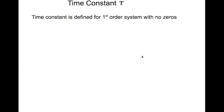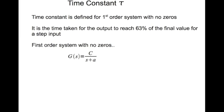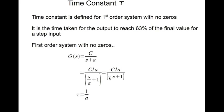Time constant. The time constant is usually defined for a first-order system with no zeros. It is defined as the time taken for the output to reach 63% of the final value for a step input. The first-order system with no zeros is generically written as g(s) = c divided by (s + a), where c is some constant and a is the location of the pole. I can rewrite this as (c/a) divided by (s/a + 1). One divided by a is the time constant, and the DC gain is given by c divided by a.